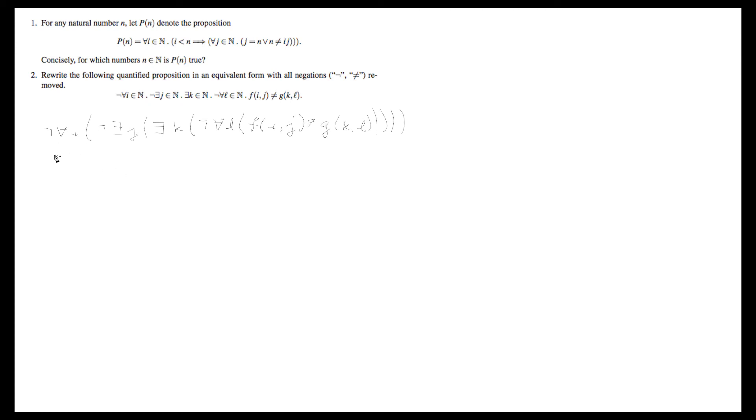So we have not for all i. What happens here is the not hits the for all and it turns into there exists an i, then it hits the parenthesis and stops. So now we have a not and then all of this stuff goes in here. And I just don't want to rewrite it all out again. You should for your homework solutions, but I'm going to take a shortcut here. So we have there exists an i such that not, not there exists a j, and more stuff in here. This not hits this not and they cancel out, so now we actually have there exists an i, there exists a j, such that all of this other stuff. So there exists an i, there exists a j, there exists a k. We don't have to do anything about that one because there's no negation, and I'm just copying this part down now.